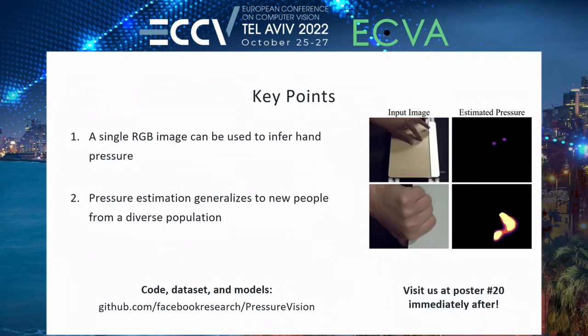To summarize, there are a few key points to take away. First, single RGB images are sufficient to infer hand pressure. Second, hand pressure estimation can generalize to new and diverse people. We also release the code, dataset, and models online. I'll be at the poster session immediately after if you'd like to chat — thank you, and I'd love to take some questions.